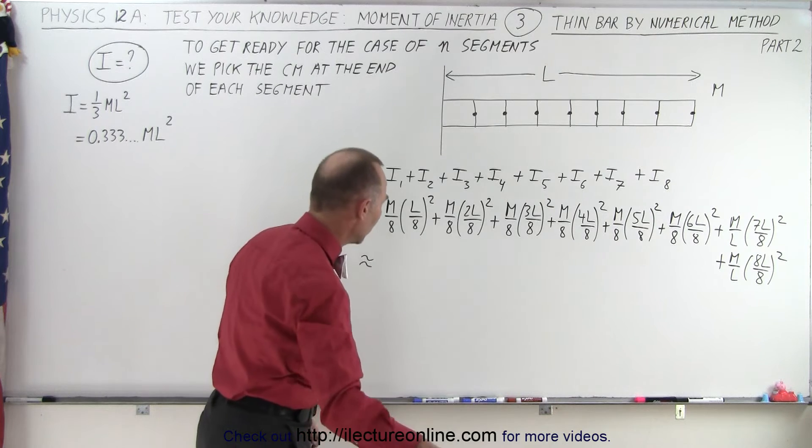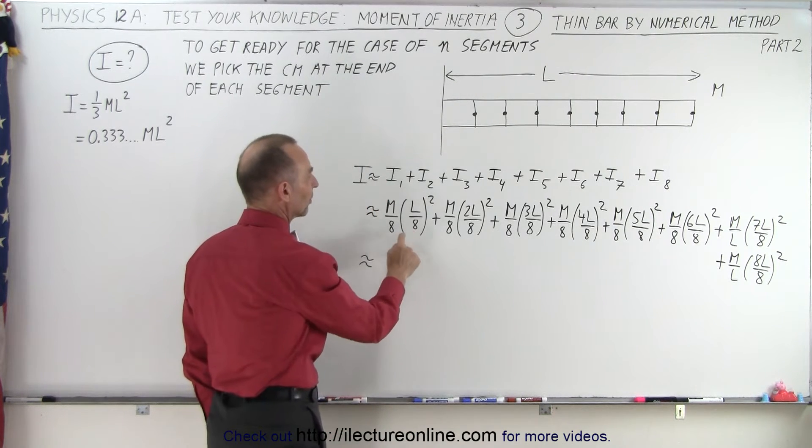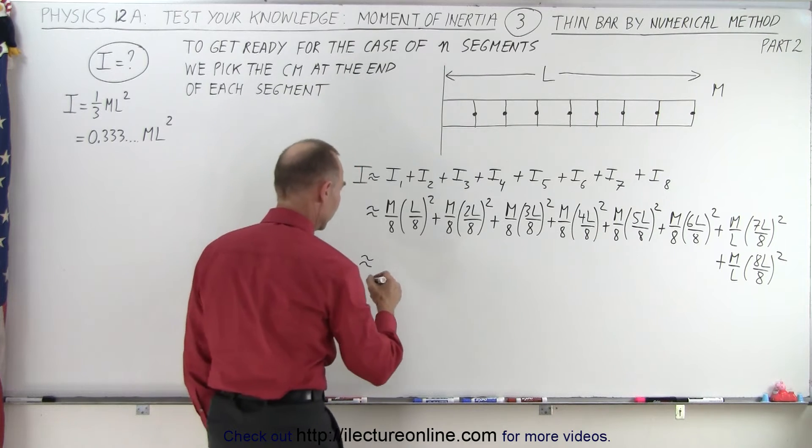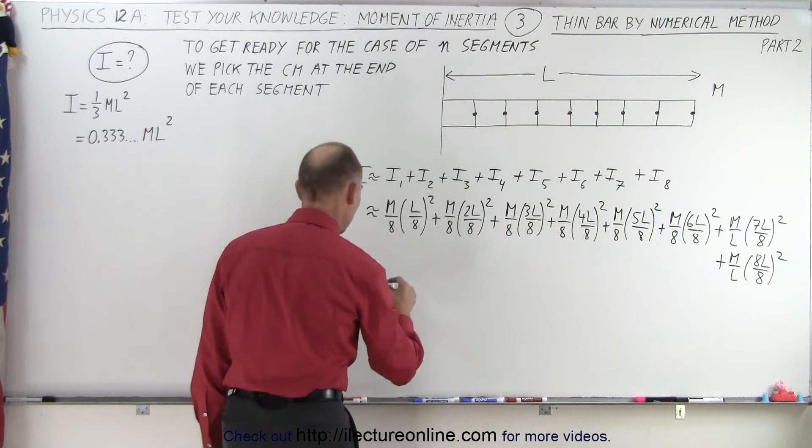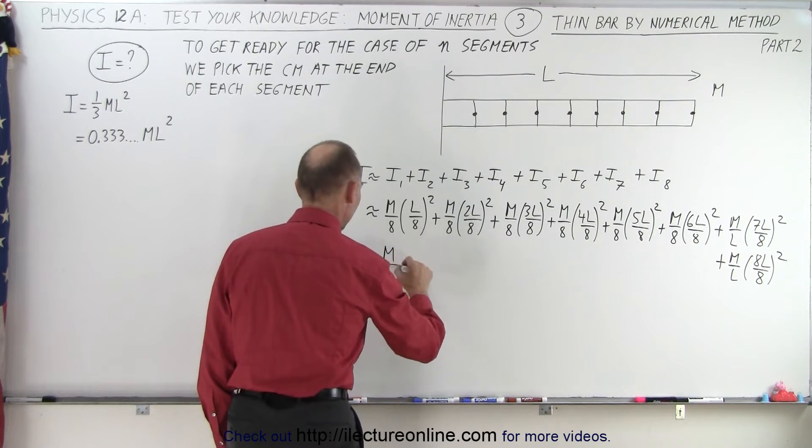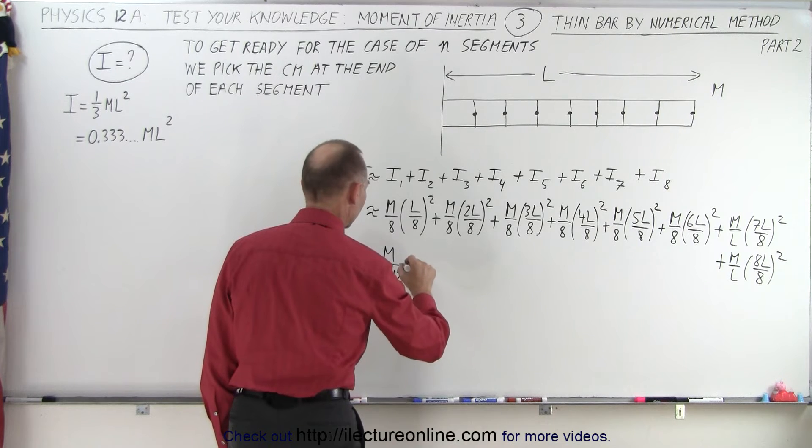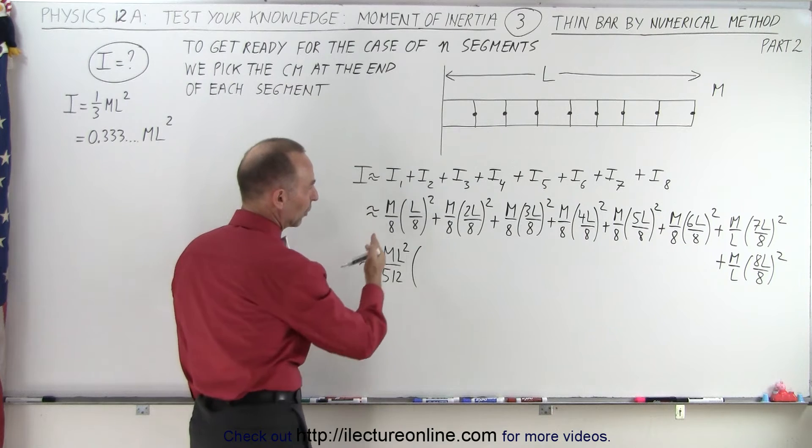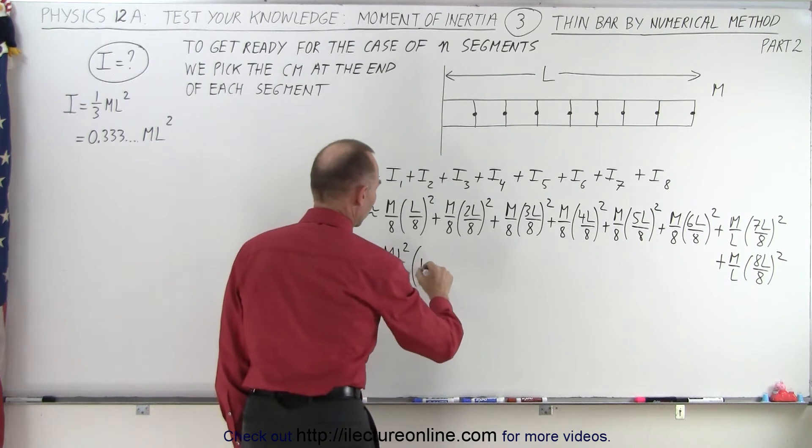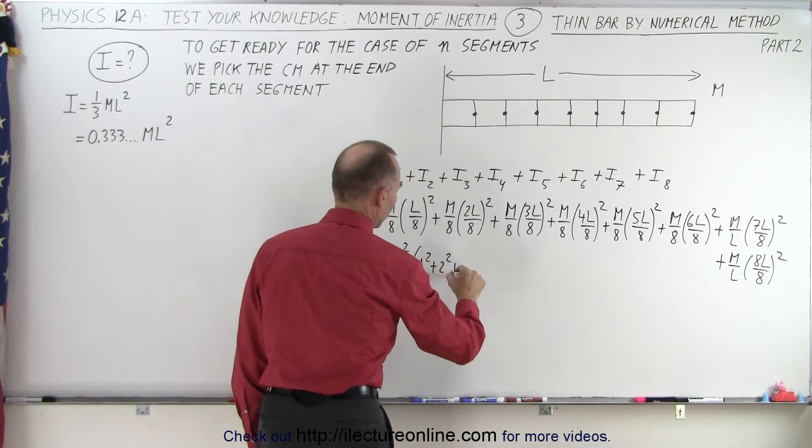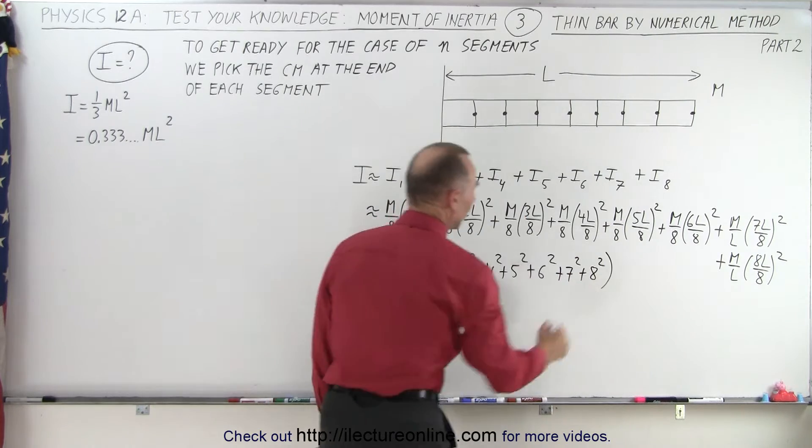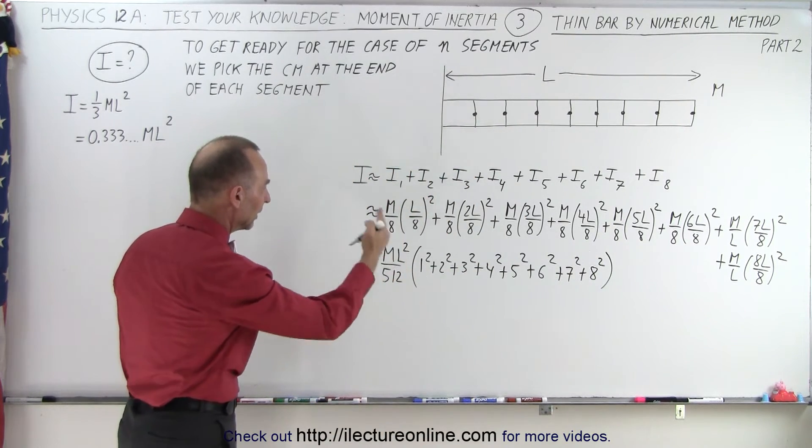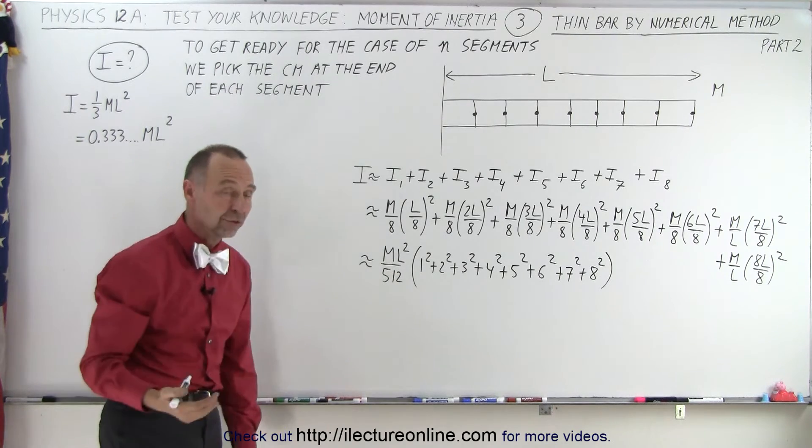I think a better way to do that would be: we have 8 squared times 8, that's 64 times 8, which is 512. 8 times 8 times 8, yep, that would be 512. So we have m divided by 512, and we can have l squared, like this, times. Now we're going to add up 1 squared plus 2 squared, like this. So what we did was we factor out an l squared, an m, and an 8 cubed in the denominator, which is 512.